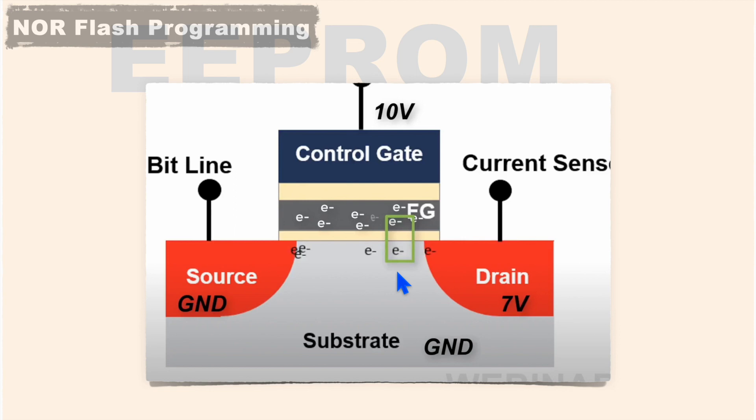So while programming NOR flash memory, a larger number of electrons will be stored in this floating gate, which causes a lesser number of program or erase count.